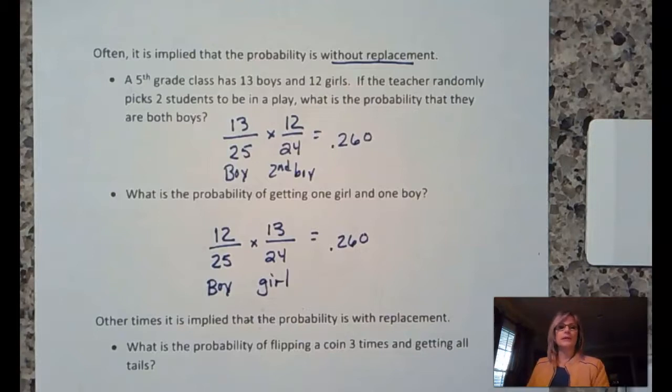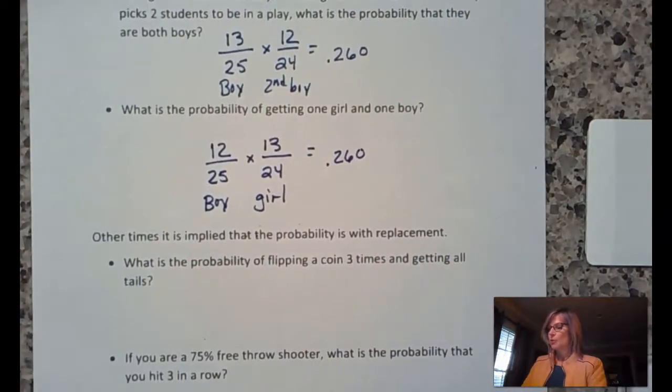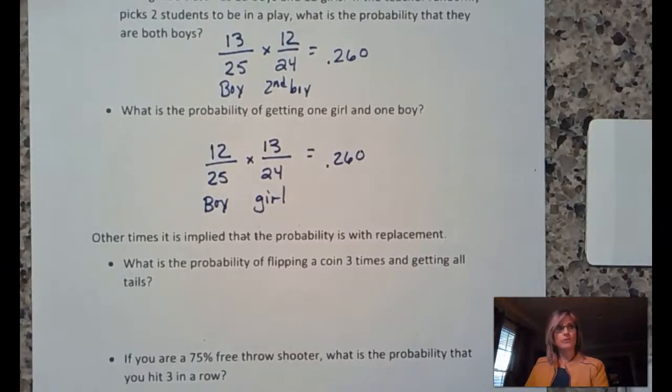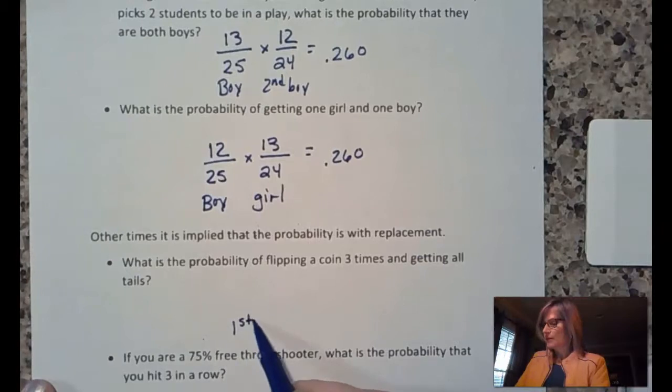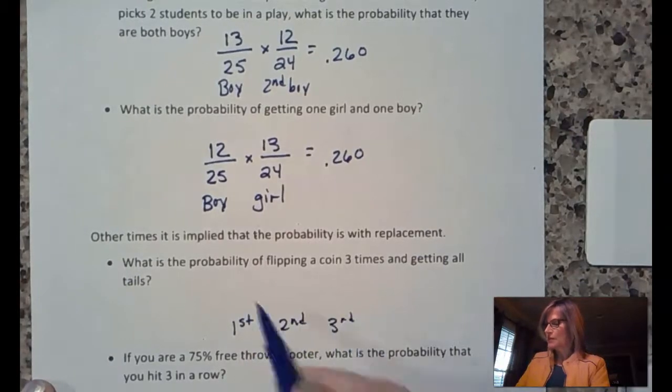Now, other times, probability is implied to do your probability with replacement. So, what is the probability of flipping a coin three times and getting all tails? Well, we will flip it three times. First time, second time, third time.